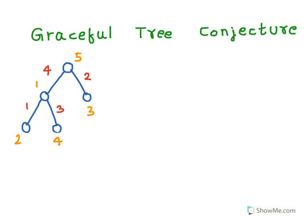So our goal is to assign labels to vertices such that the corresponding edges get unique labels. Now the question is, can we do this for every tree?